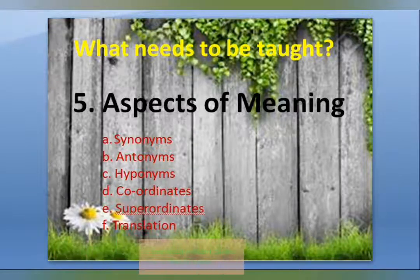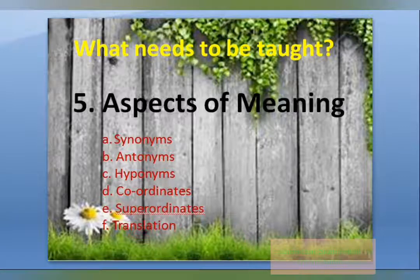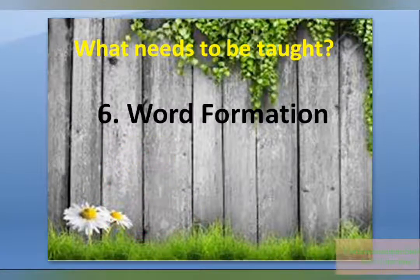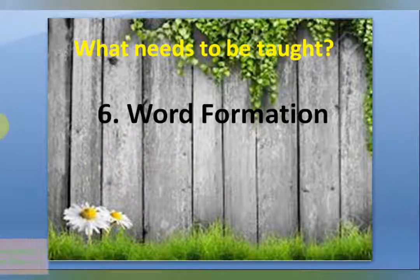Associative fields are items that are part of the same context — for example, farm, farmer, cattle, field, crops are all associated with farming or cultivation.